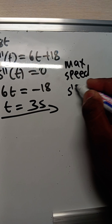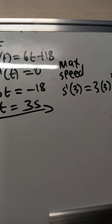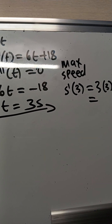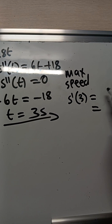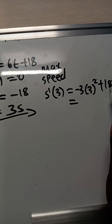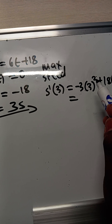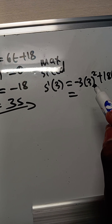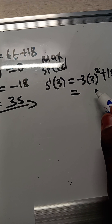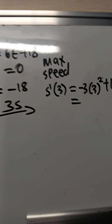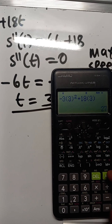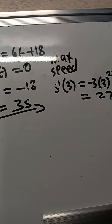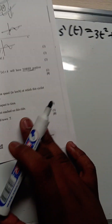To find the maximum speed, substitute t = 3 into the given equation: s'(3) = -3(3²) + 18(3). Now 3² = 9, so -3 × 9 = -27, and 18 × 3 = 54. That gives -27 + 54 = 27. So the maximum speed is 27 kilometers per hour.